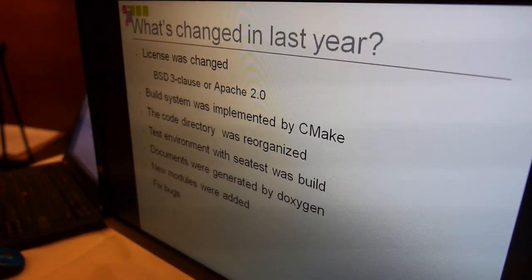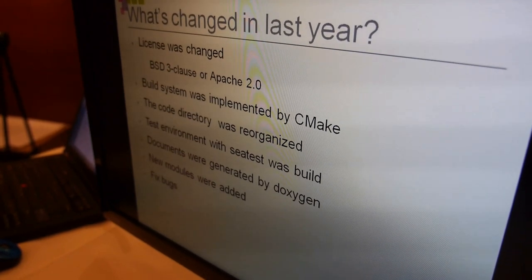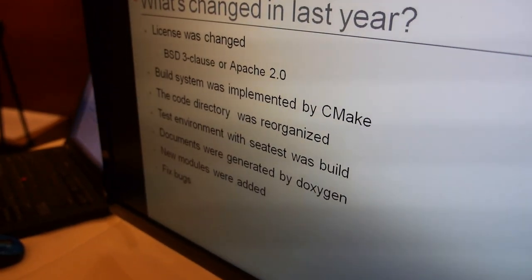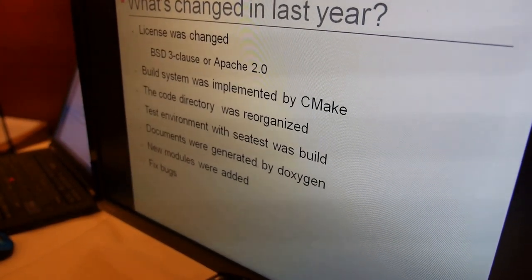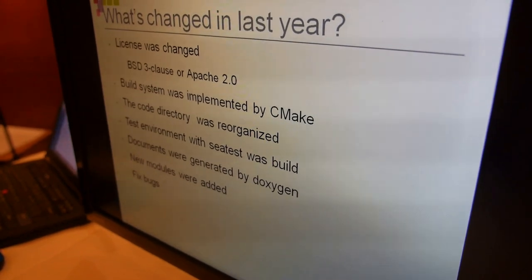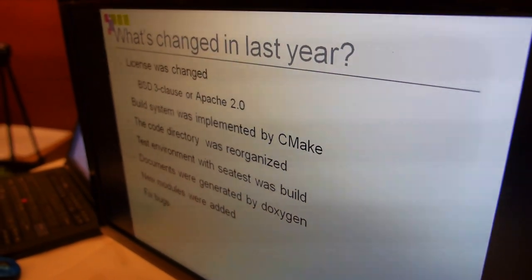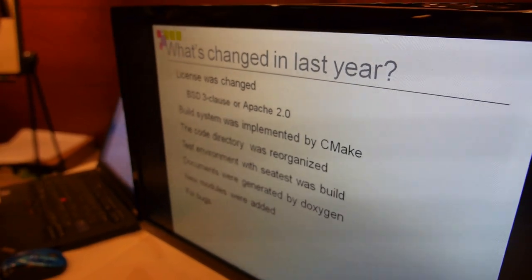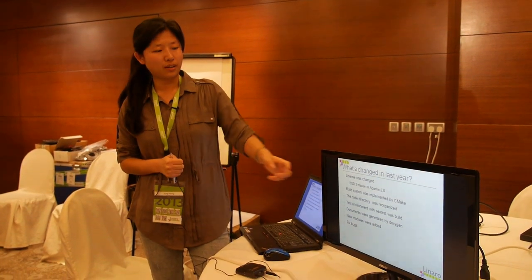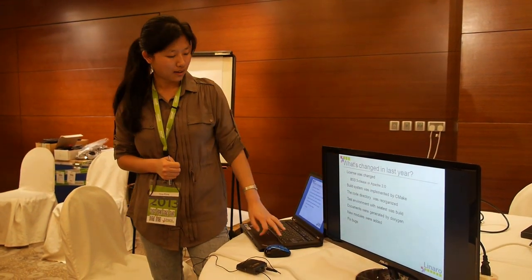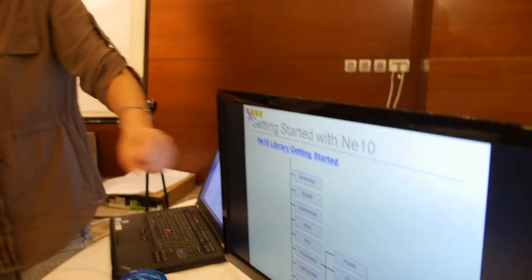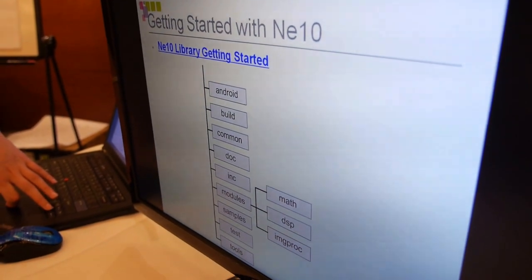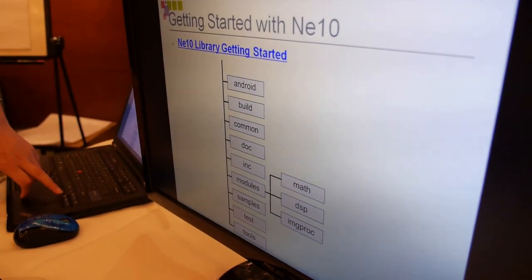For example, you can use CMake to support iOS, Android, Linux, and even Windows. The code directory was also reorganized last year. The code directory now only has the NE10 source modules, so it's simpler. Currently, we reorganized it so it's easier to know which directory is for what function.